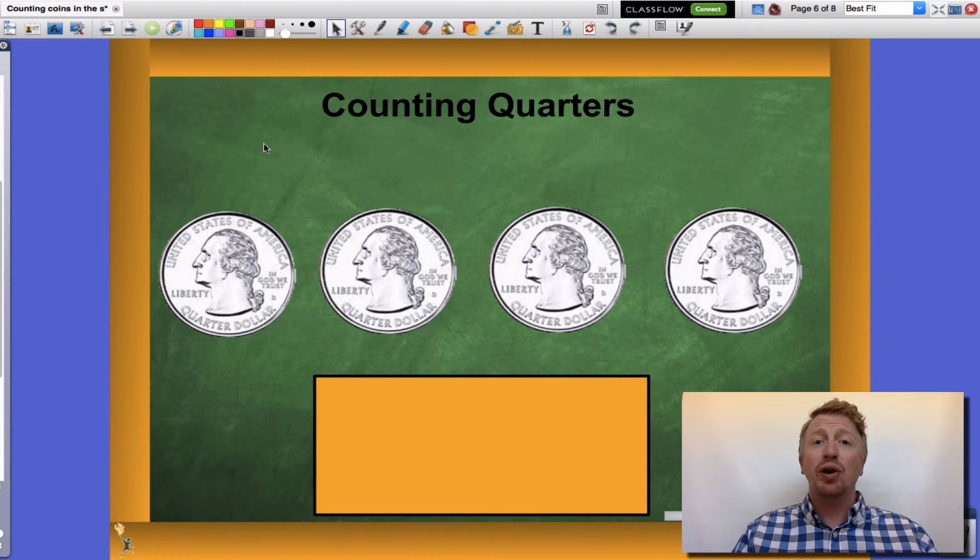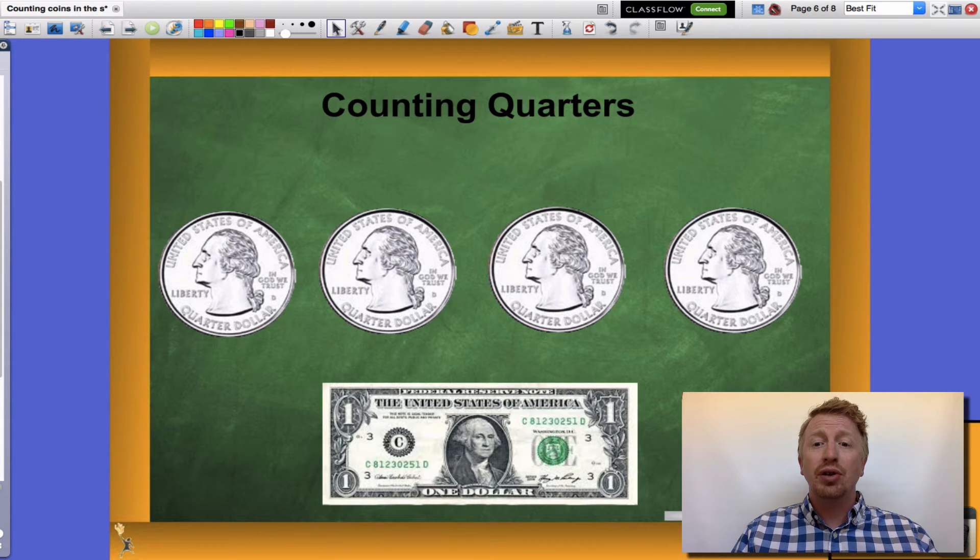Let's take a look at our last one, quarters. Quarters are worth twenty-five cents apiece. Now I find it a little bit tricky to count by twenty-fives. That's something I'm not used to having to do. But, one important thing to remember when counting quarters: four of them equals one whole dollar or one hundred cents.